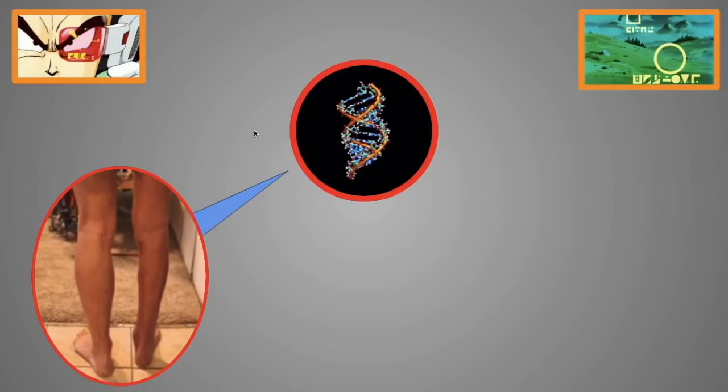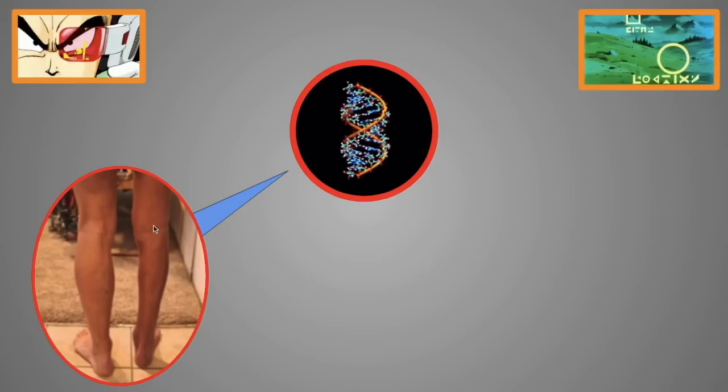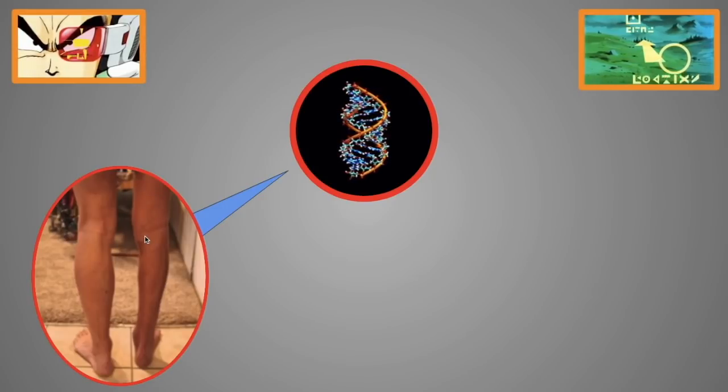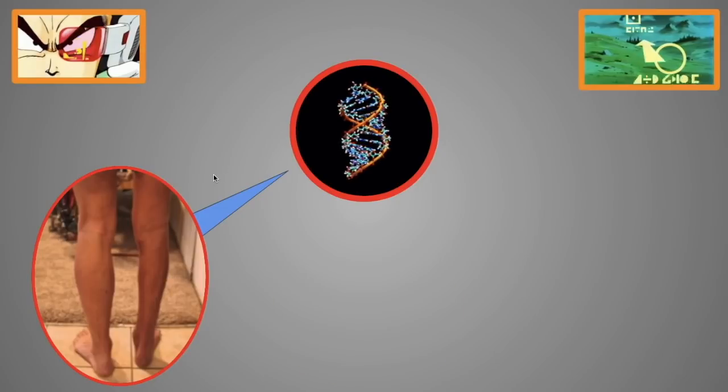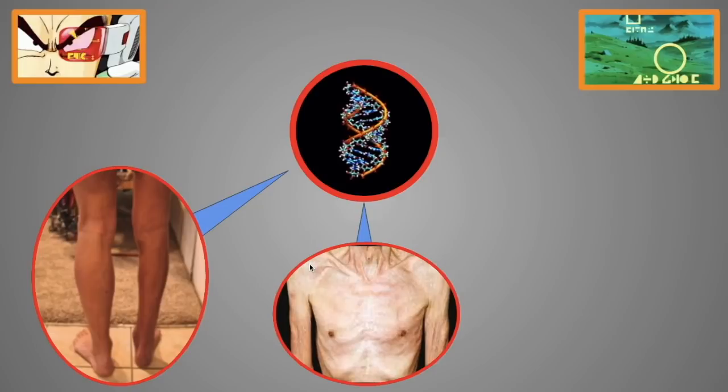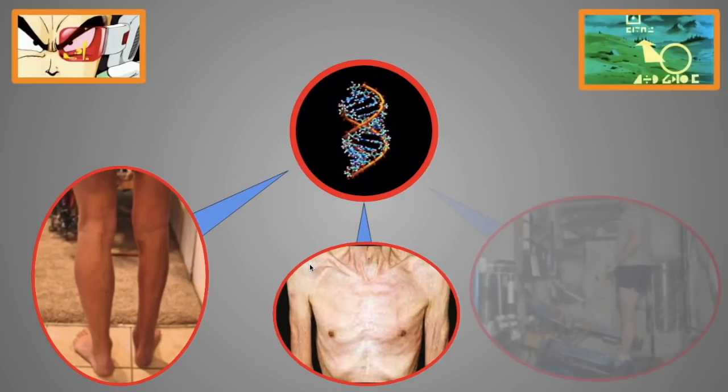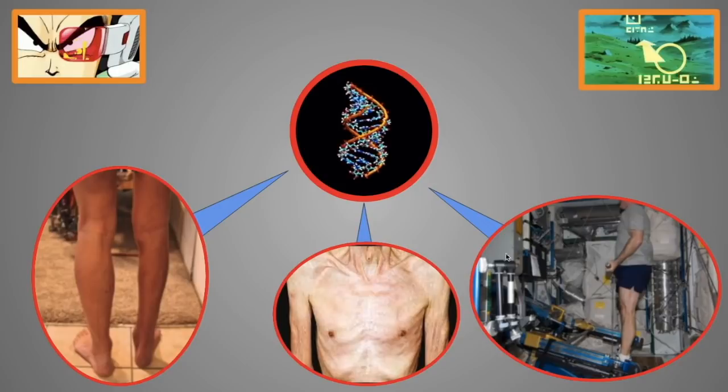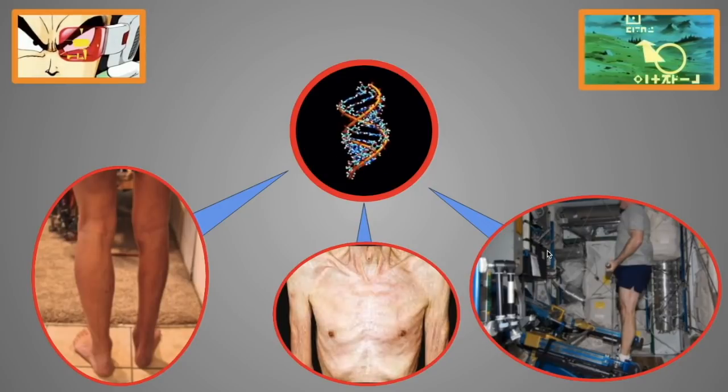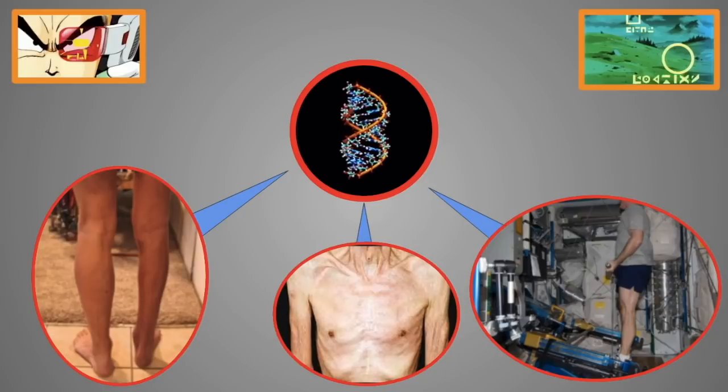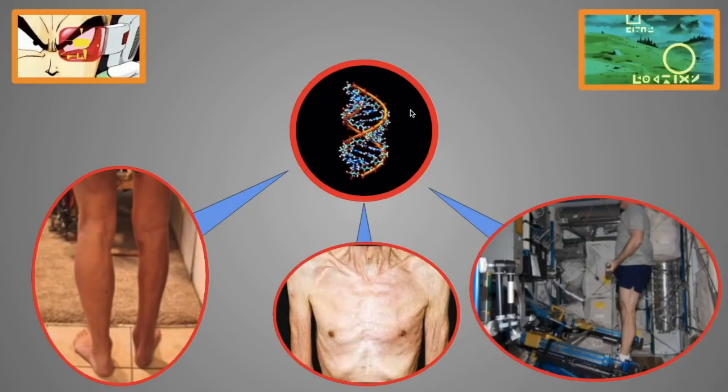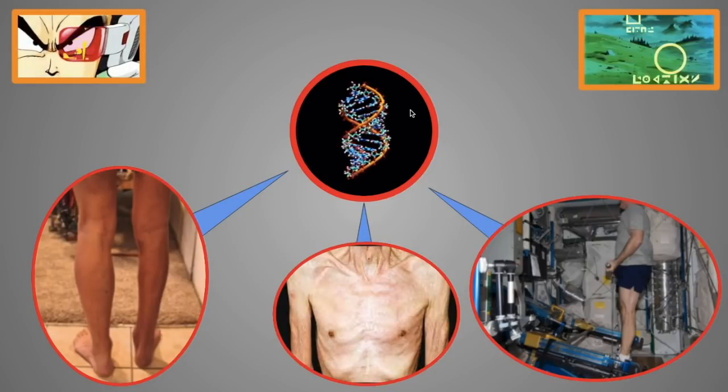Here are some examples of what happens when your myostatin levels are too high. For example, the reason why your legs shrink when you put them in a cast or you immobilize for a long time is because myostatin levels go up. The reason why HIV and cancer patients lose a ton of muscle so fast is also because the myostatin levels go up. And the reason why astronauts lose a ton of muscle mass in space is because, once again, when you go into space in a low-gravity environment, myostatin also goes up.